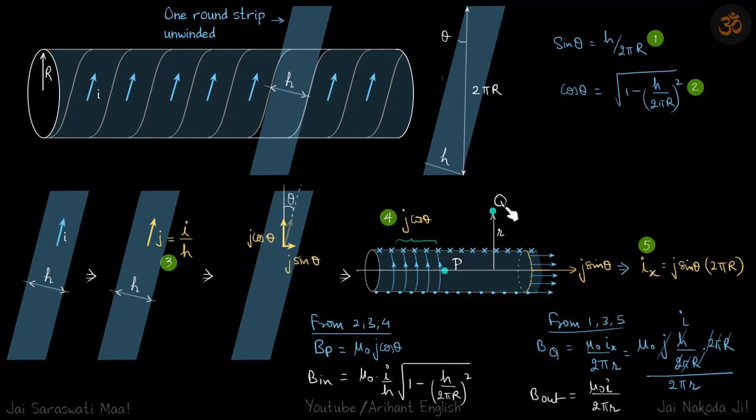Axially the current is j sin θ times 2πr. Our field outside at a point q at a distance r is μ₀iₓ/(2πr). We replace the value of iₓ here and get our answer μ₀i/(2πr). You can think of it as the i current is entering the solenoid and i current is leaving. If you take any cross section, then the i current is crossing that cross section. Current entering equals current crossing equals current leaving.